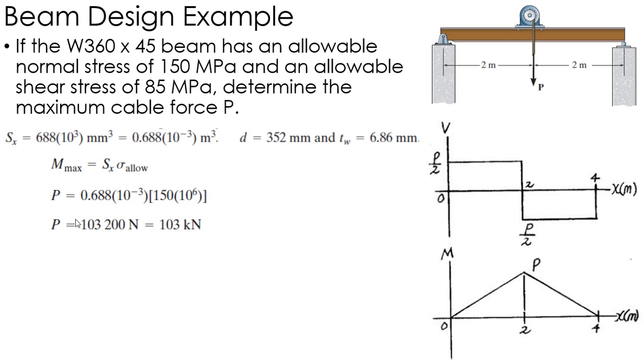Now having that, we want to make sure it does not fail in shear. If that is my load, my maximum shear is half of that, which is 51,600 newtons. We get that from P over 2 in the shear diagram.